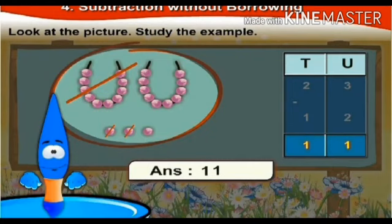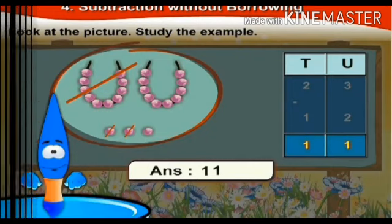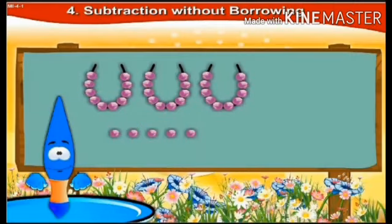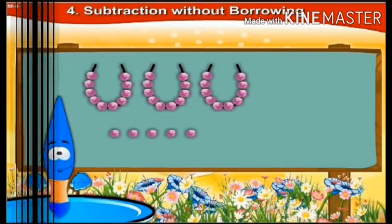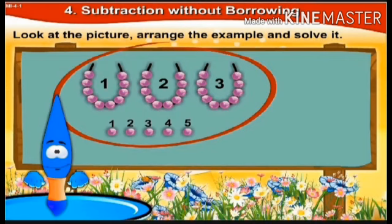In order to make the concept more clear, let's move on to another example. Look at the picture and tell me how many tens and units of beads are there. Correct — there are three tens and five units. Let's arrange them in the column.